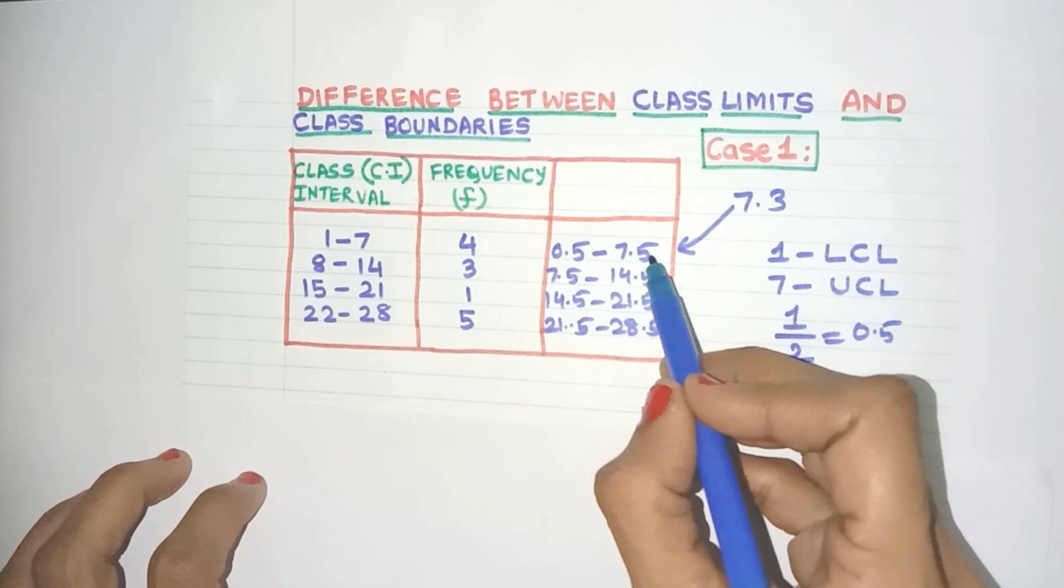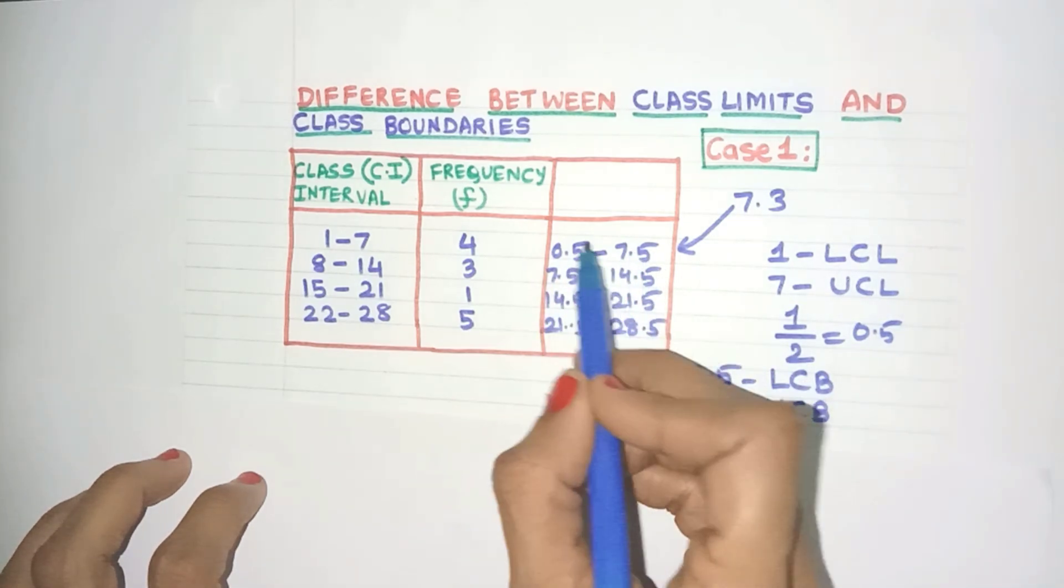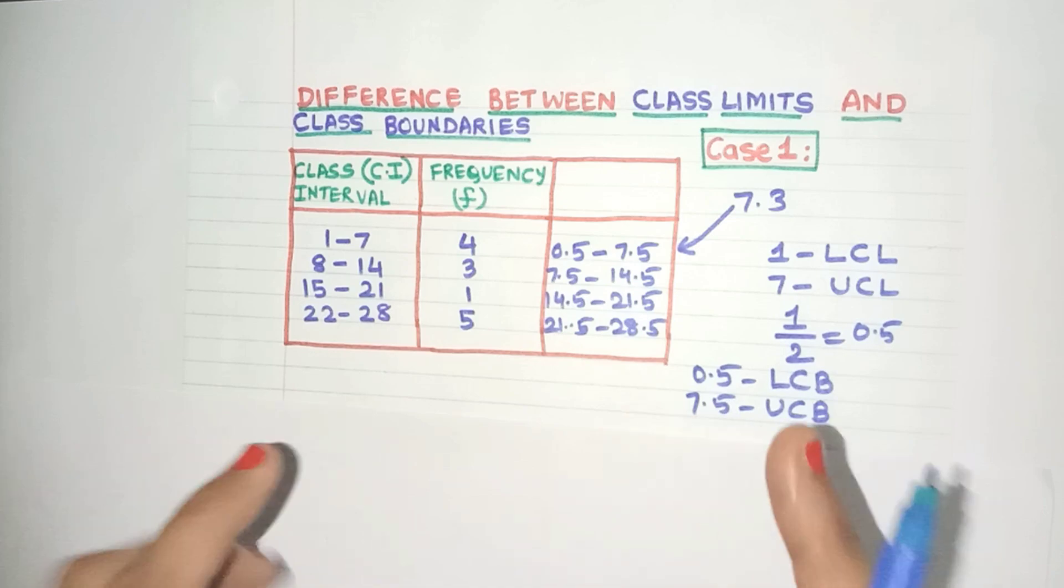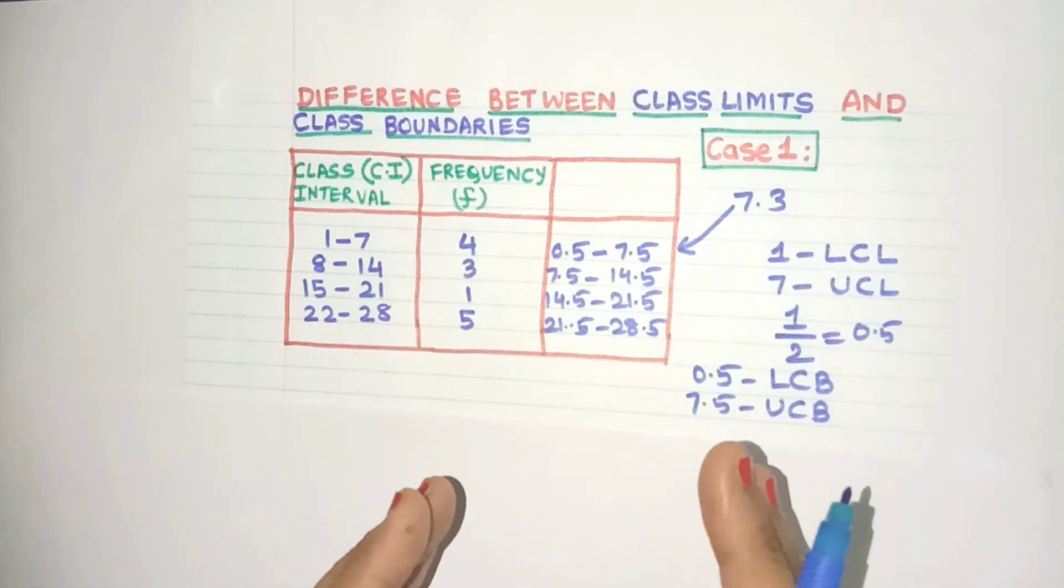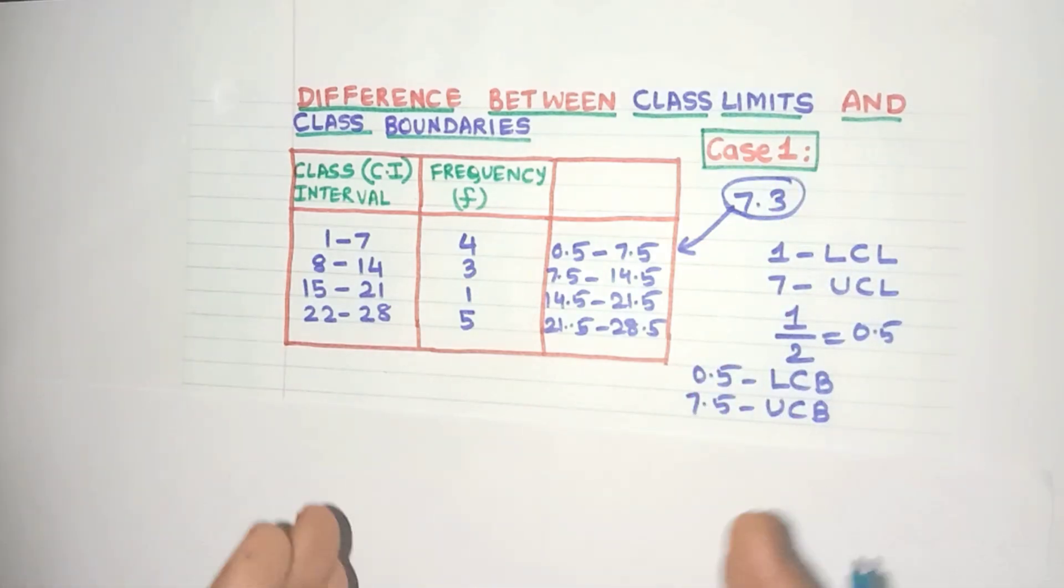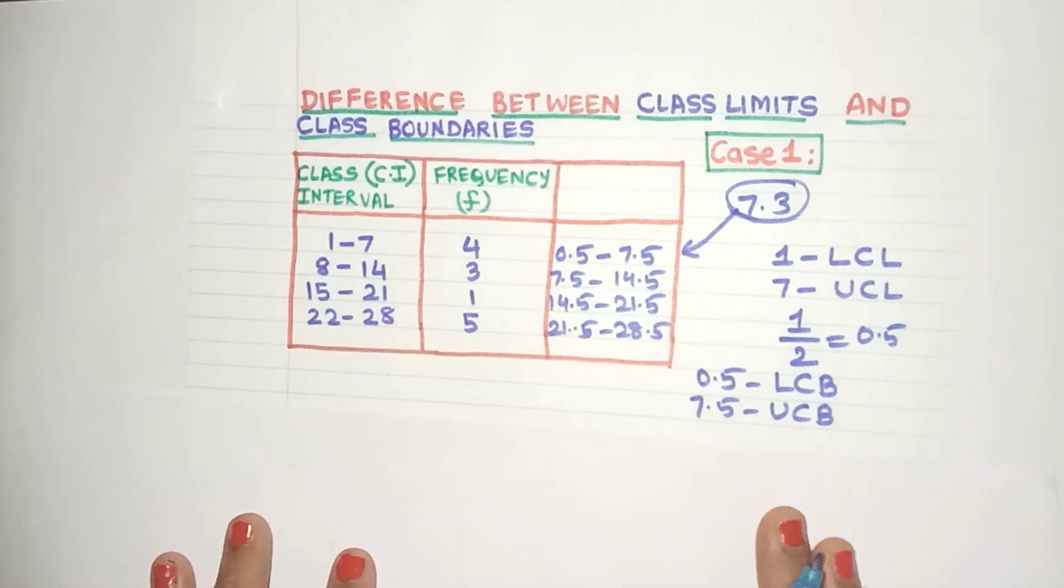Now because the upper class boundary value is excluded from each class interval, these are also known as exclusive class intervals. So friends with these class boundaries, you can now draw your histograms, you can add continuous data, you can also calculate median and mode. So friends I hope this case is clear to you.